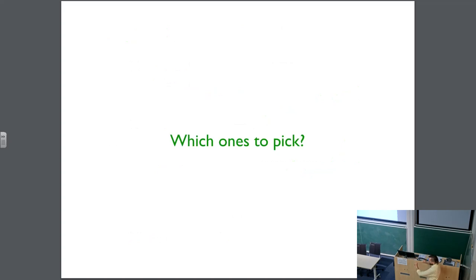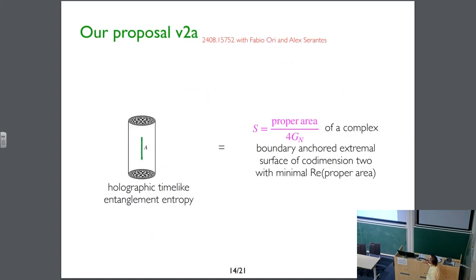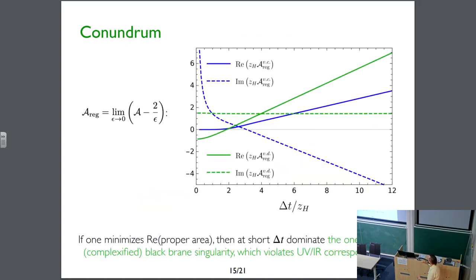So which one do we pick? Option one — the conservative choice — is to pick the surface with the minimal real value of the proper area. That's very natural, and it's the first thing we considered. But according to the area behavior, at short separations this picks the surface that probes the black hole singularity, which is very radical because it violates the UV-IR correspondence in a stark way.